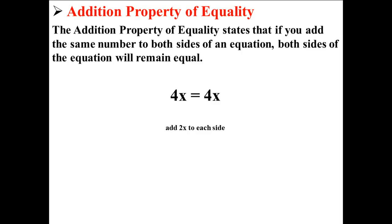Now let's add 2x to each side. So we come up with 6x equals 6x. Because we added the same thing to both sides, the equation remains true. 6x is obviously equal to 6x.